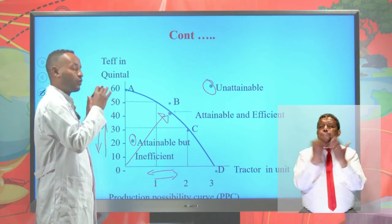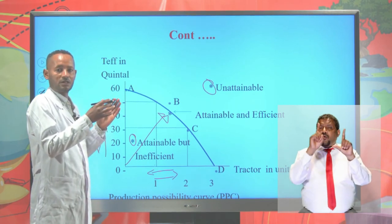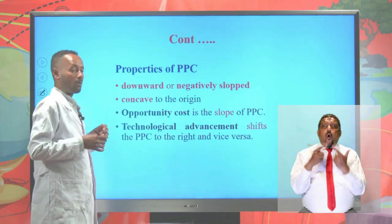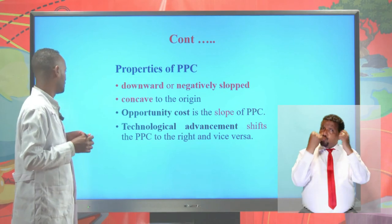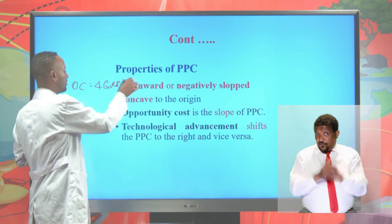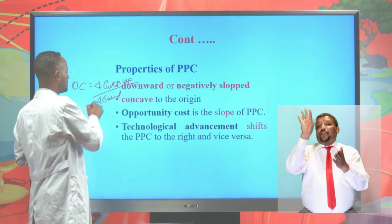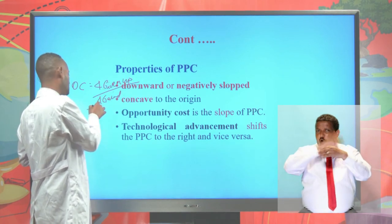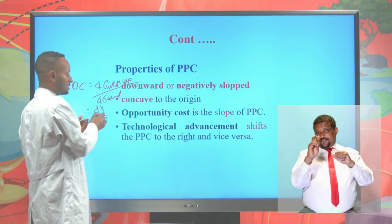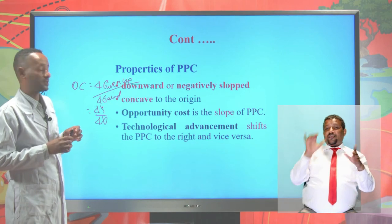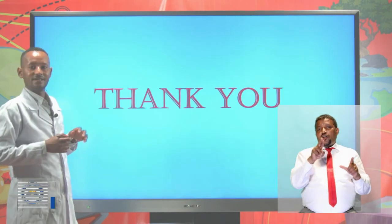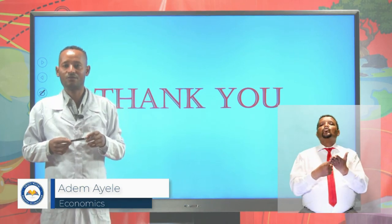If there is technological advancement, the PPC will shift outward. If there is backward technology, the PPC will shift inward. Another important property: the opportunity cost of a commodity is the slope of the PPC, since it is calculated as the change in the y-axis variable (given up) divided by the change in the x-axis variable (gained), which equals the vertical difference over the horizontal difference — the slope.